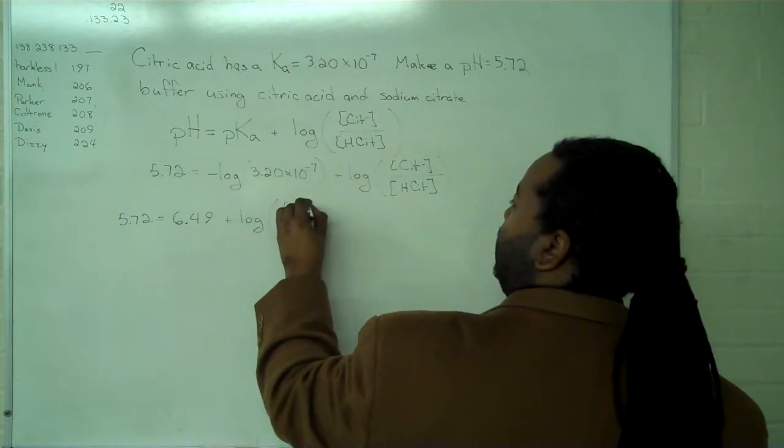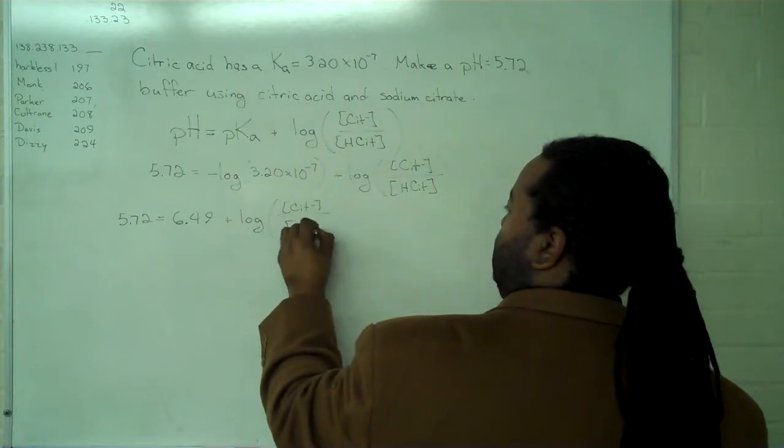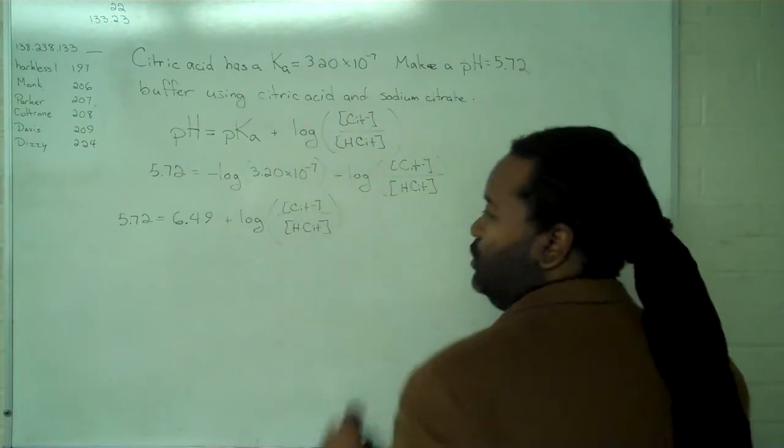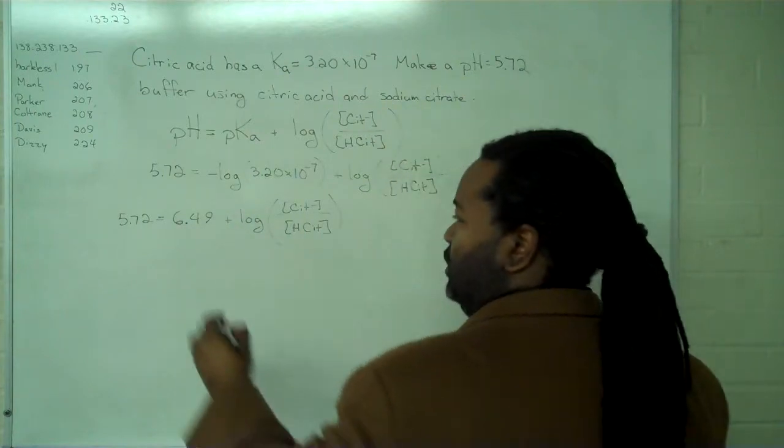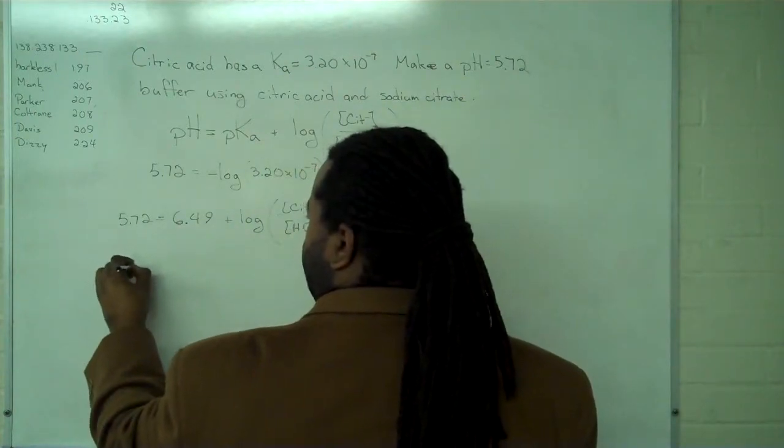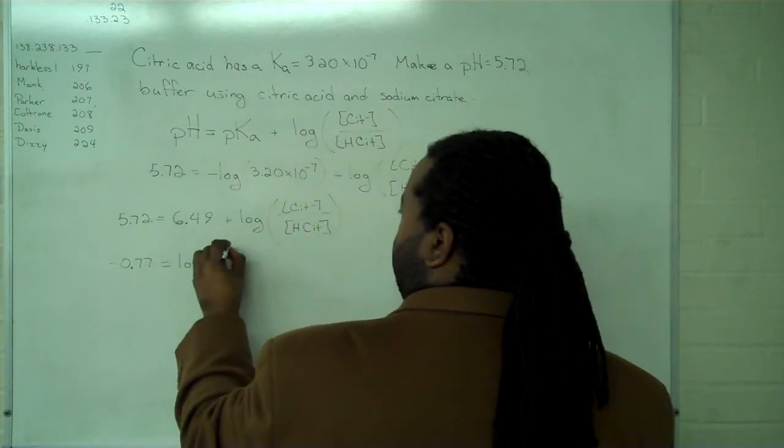So now we want to have numbers on one side and logarithms on the other. So we'll subtract 6.49 from both sides, and this leaves us with negative 0.77, being equal to the log of our ratio.